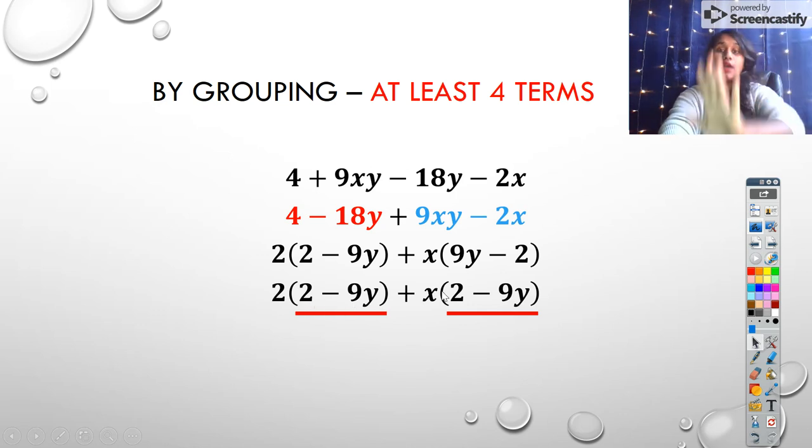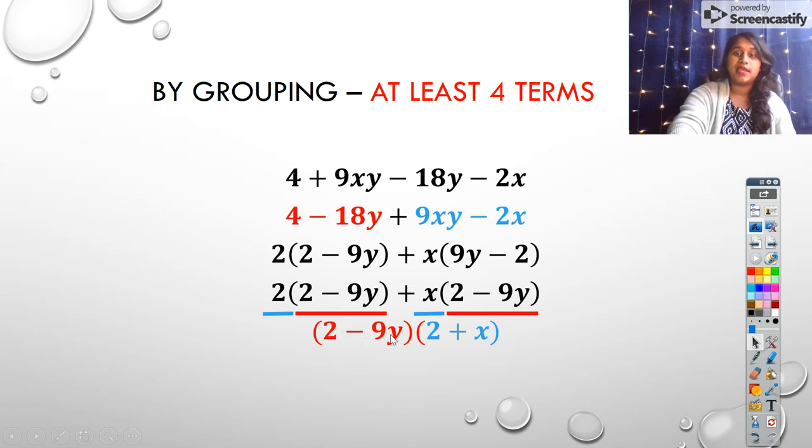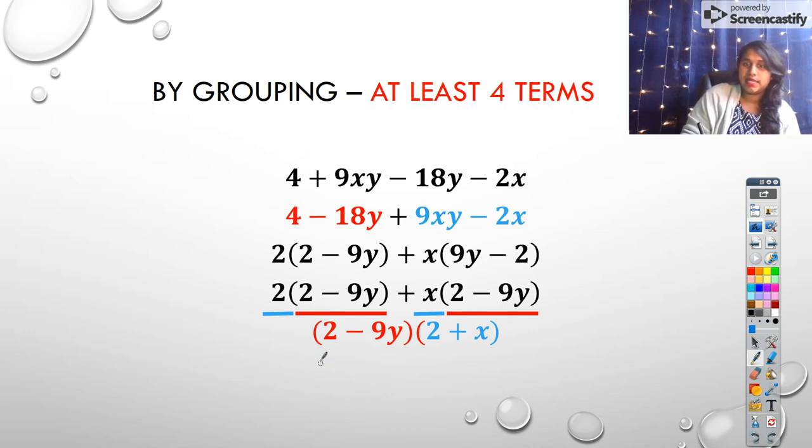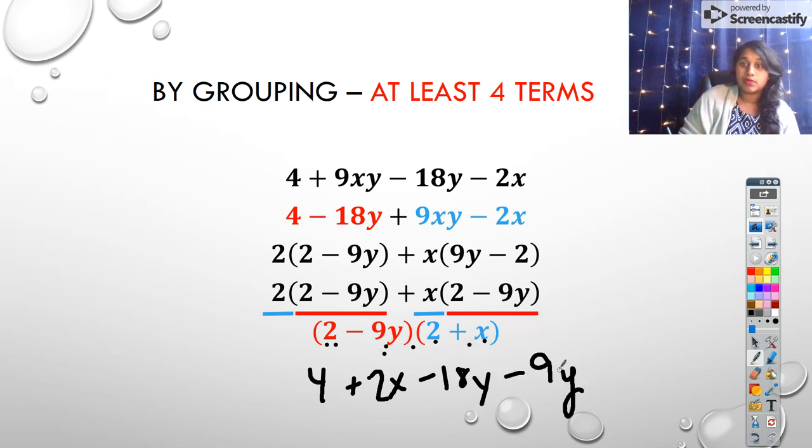So now we're left with two common binomials. I can pull that binomial out, and I'm left with (2 - 9y), and my final binomial is (2 + x). If I wanted to test that back, I could FOIL back out. I'm going to test that. So my first terms, that's going to be 4. My outer terms, that's 2x. My inner term is going to be 18y. And my outer term is going to be -9xy.